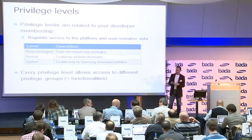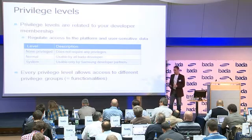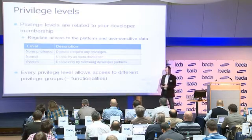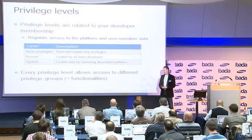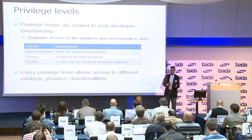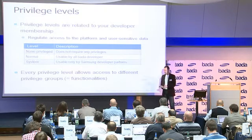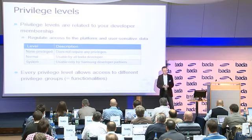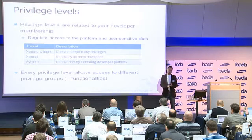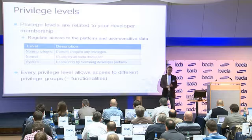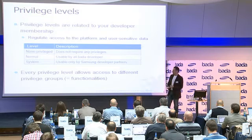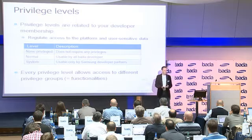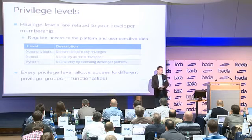In combination with these privilege levels we have the so-called privilege groups, which again summarize specific functionalities. Depending on your privilege level you have access to specific privilege groups. For example, two privilege groups are: camera — so every interaction with the camera is one privilege group connected to the normal level — and location, which is also connected to the normal privilege level.